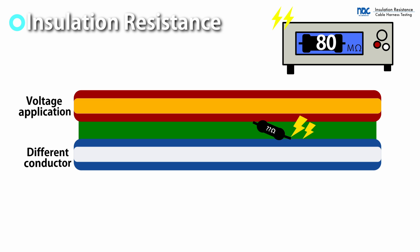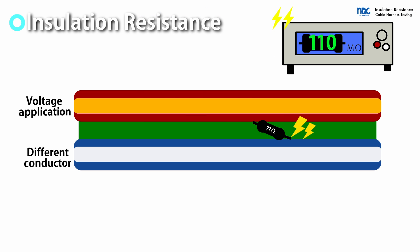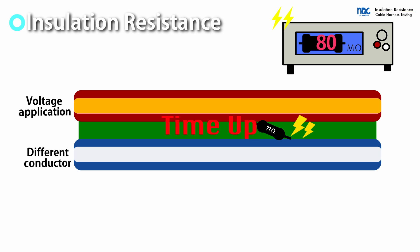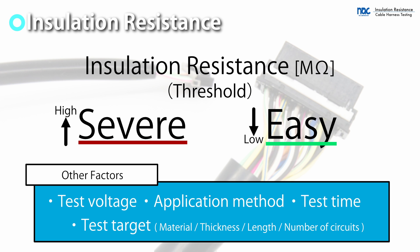While high voltage is applied to the high side, the insulation resistance of the low side is monitored. If the insulation resistance does not reach the judgment value within the specified time, the test is failed. The higher the insulation resistance judgment value, the more severe the test.